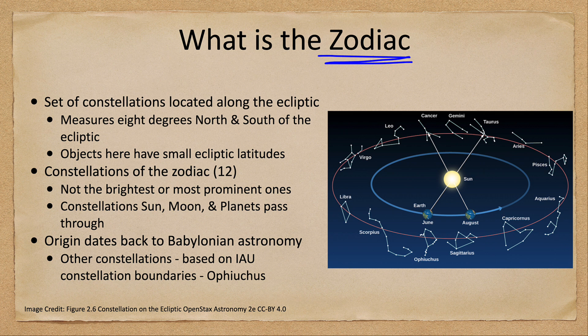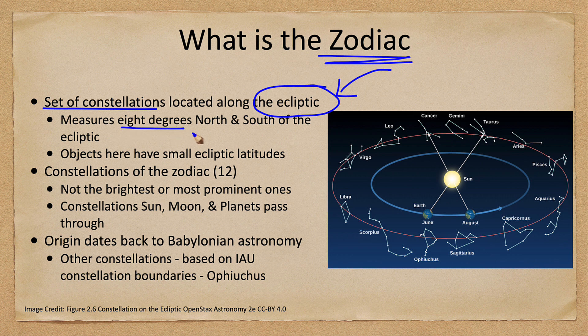You often hear the zodiac associated with astrology, but its origins are actually in astronomy. The zodiac is the set of constellations that are located along the ecliptic — the path the sun appears to take in the sky. Formally, it measures eight degrees north and south of the ecliptic, and the constellations within that range are considered the constellations of the zodiac. There are 12 primary ones.